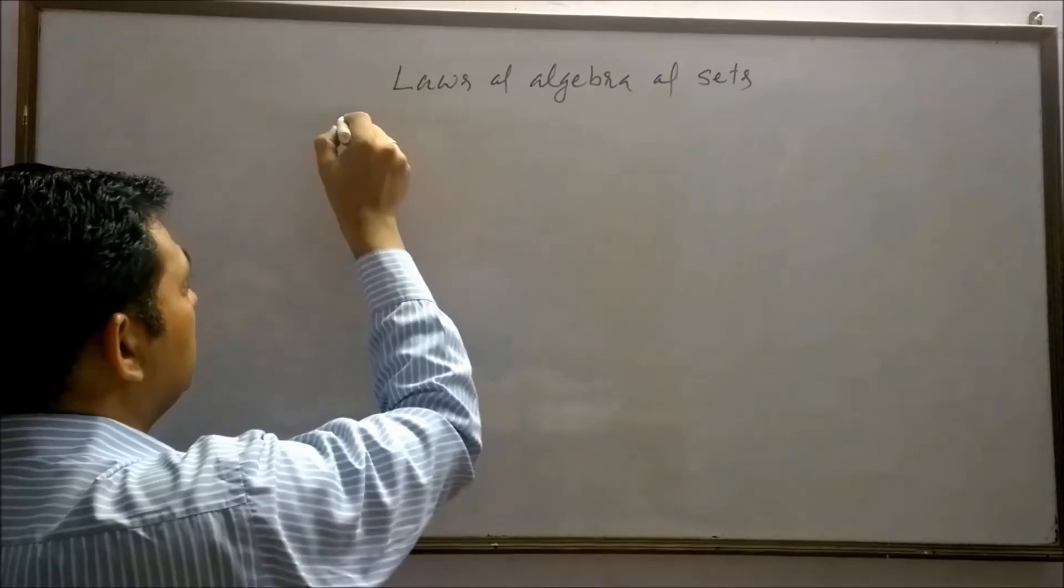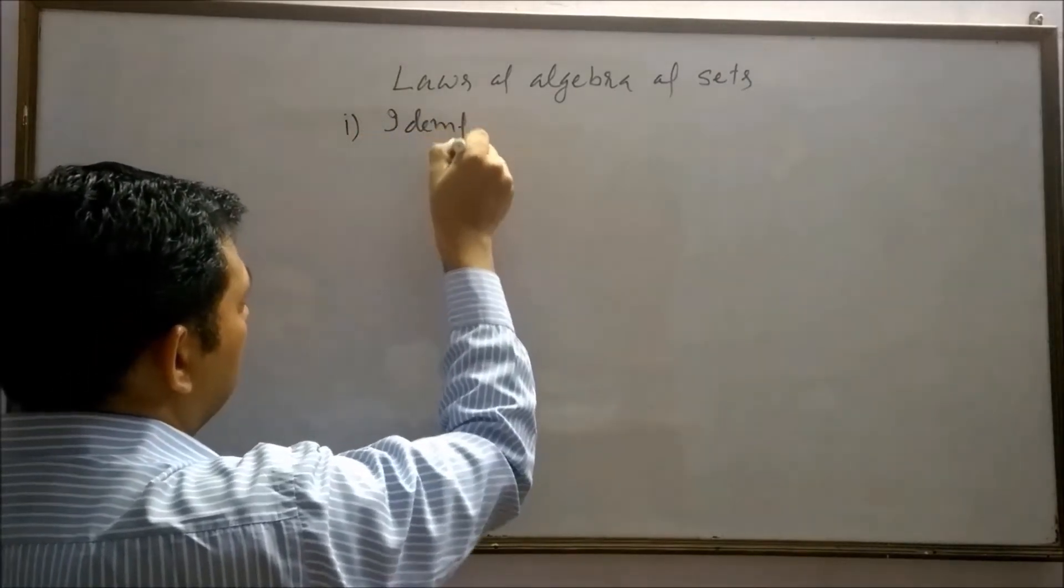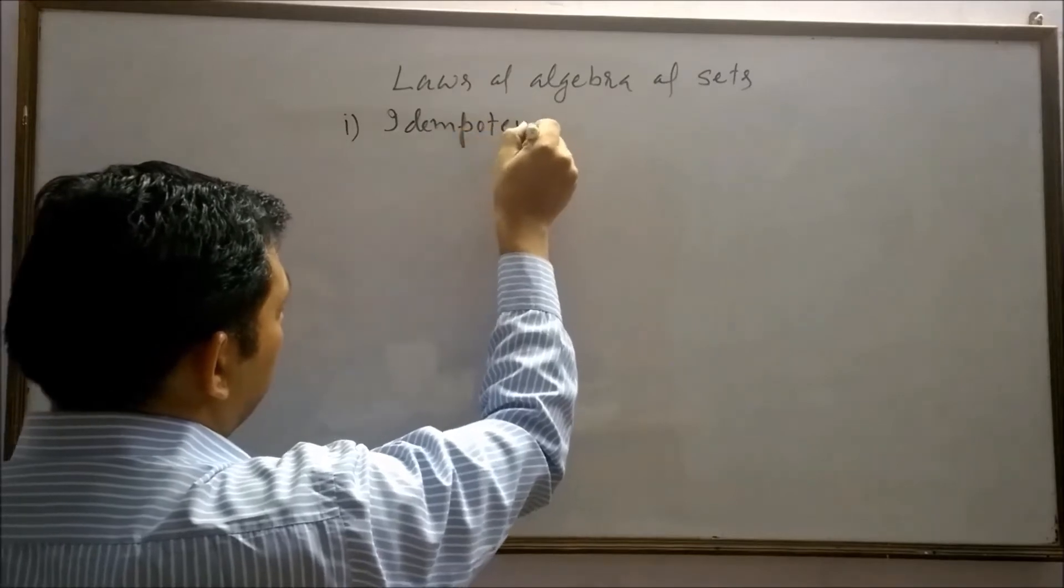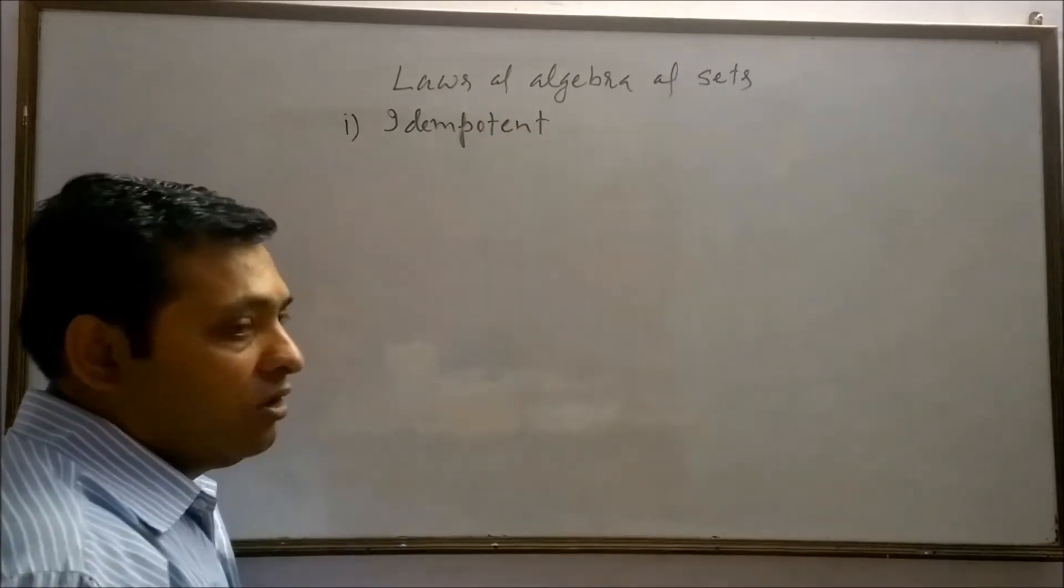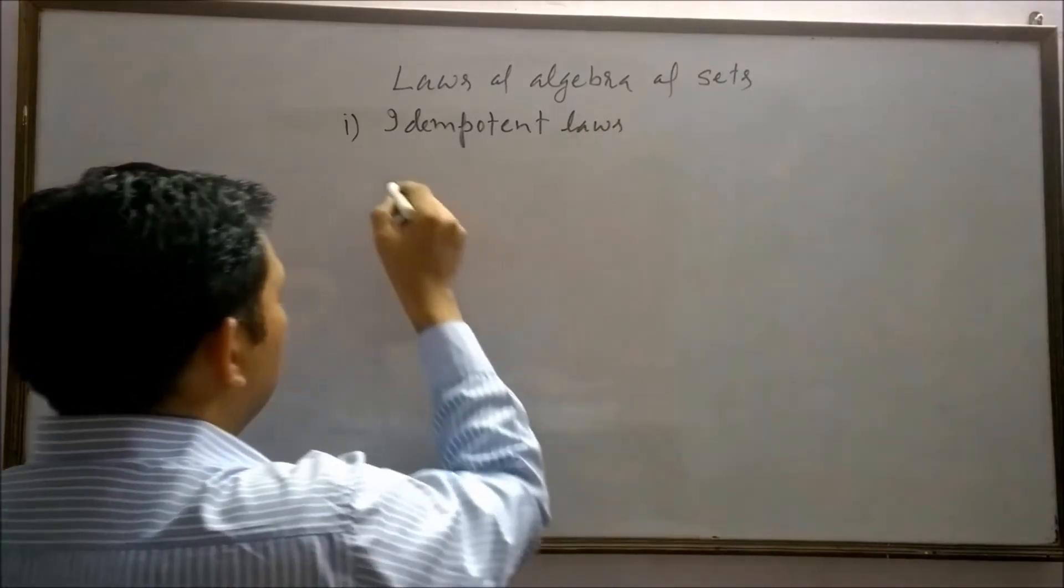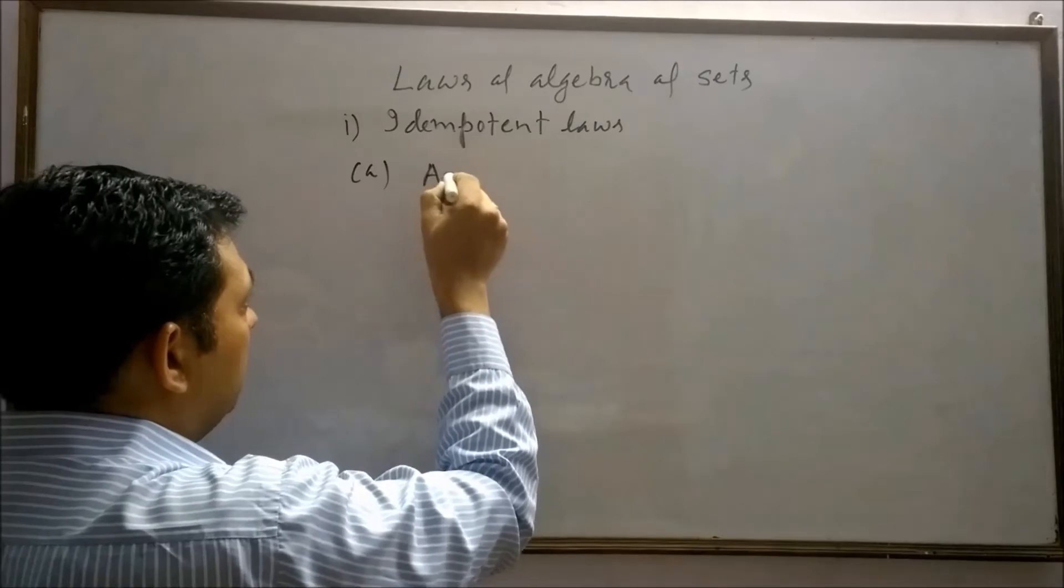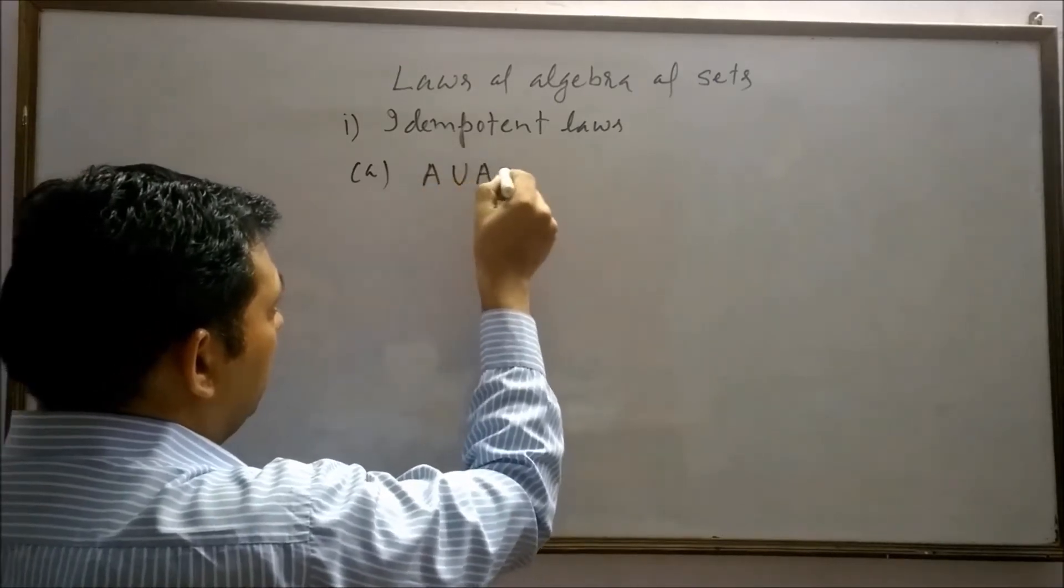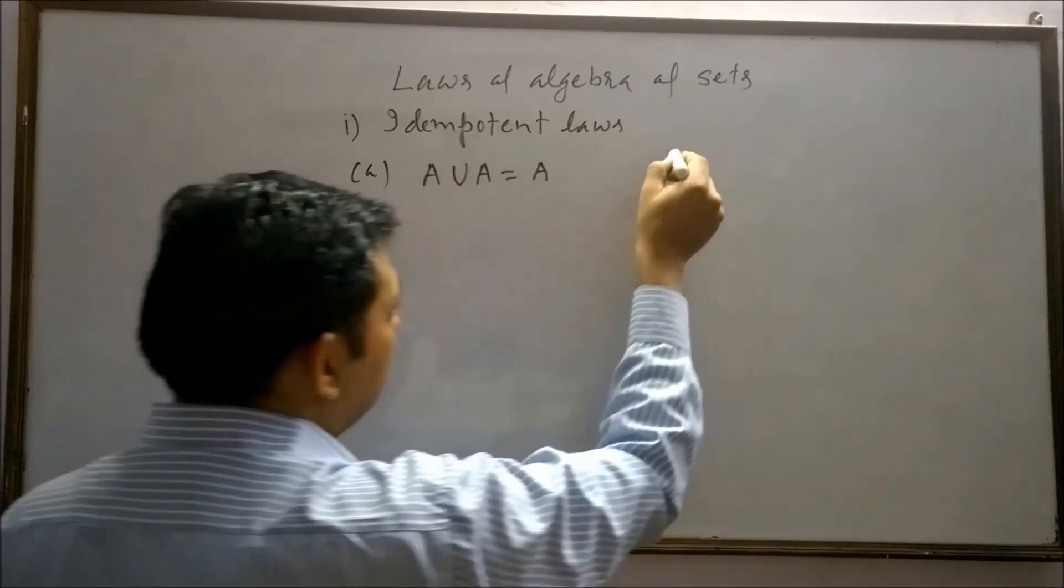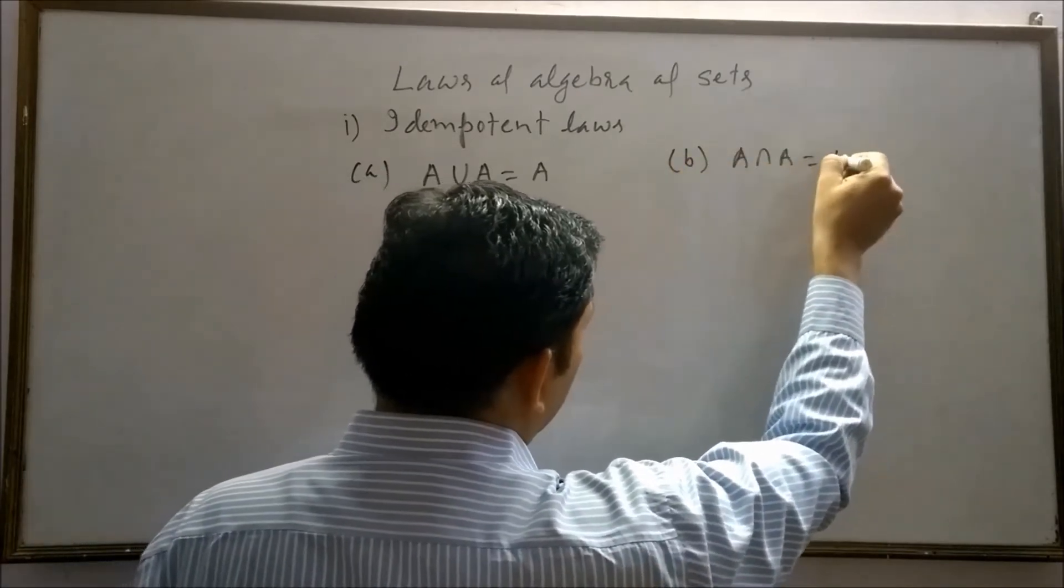First law is Idempotent Law. In this law, A union A equals A. A intersection A is always A.